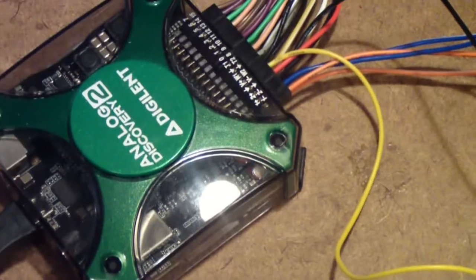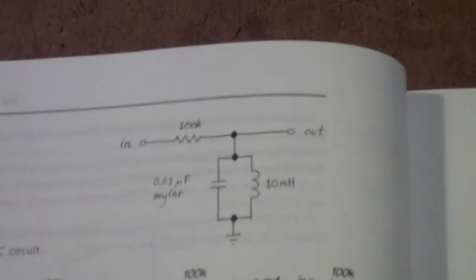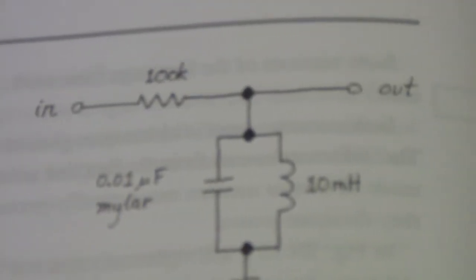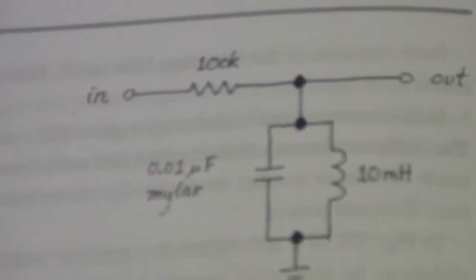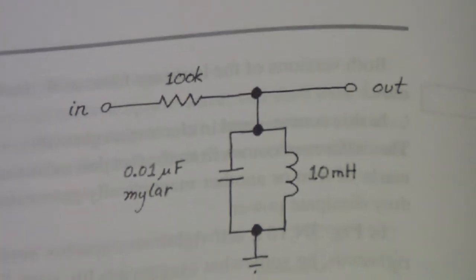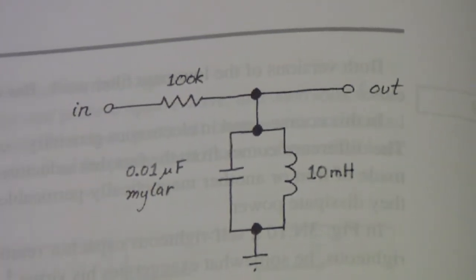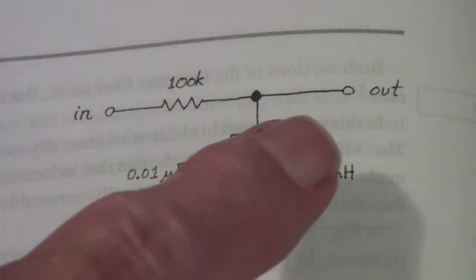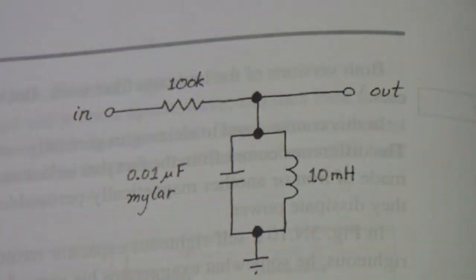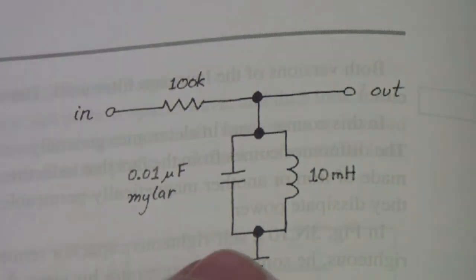on a project board. The Analog Discovery is connected with the waveform generator and channel 1 of the oscilloscope to the input, and channel 2 of the oscilloscope to the output, all referenced to ground.